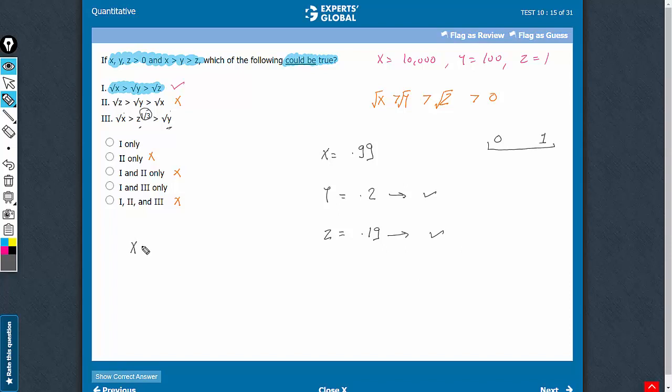Let me take an example that would be more intuitive. x can be anything. Let's say x is equal to 100, and let's say y is equal to 1 by 64, and z is equal to 1 by 125. So, originally, x is greater than y is greater than z, and all are positive, but when we take square root of x, we get 10 here. When we take square root of 1 by 64, we get 1 by 8 here, and when we take cube root of z, we get 1 by 5 here.